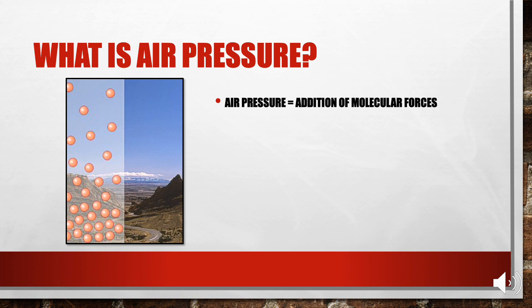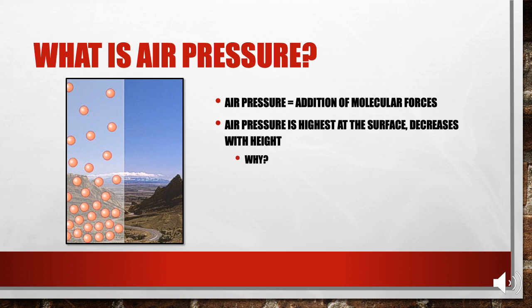In the atmosphere, air pressure will always be highest close to the ground, decreasing as you get higher above the surface. Why do you think that is? Well, it's gravity. The Earth's gravitational pull causes air molecules to stack up at the surface and become more sparse as you get farther from the center of the Earth.